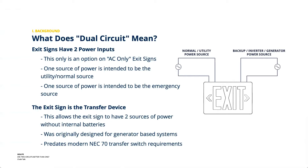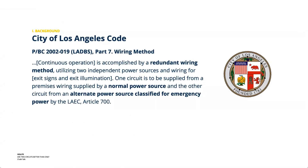This was originally designed for generator-based systems and predates modern electrical code. It came principally from the City of Los Angeles. What you see on screen is the old version of the code — early 2000s and earlier — which really nails it down: 'Continuous operation of emergency lighting is accomplished by redundant wiring methods utilizing two independent power sources and wiring for the exit signs. One circuit is supplied from the normal power source and the other from the alternate power source classified for emergency power.'